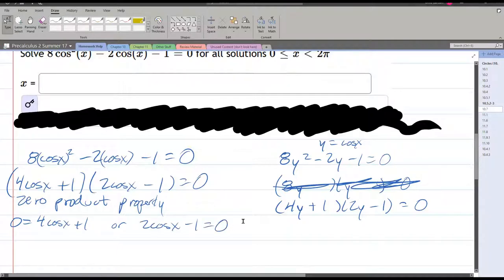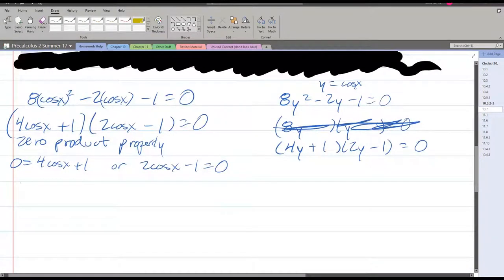Or 2cos x - 1 = 0. We'll just do the one on the left first. So subtract 1, divide by 4. Or, we'll add 1 and then divide by 2.